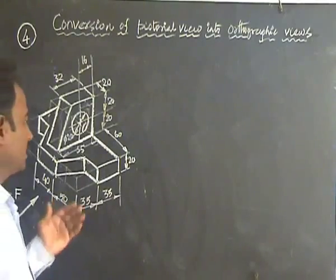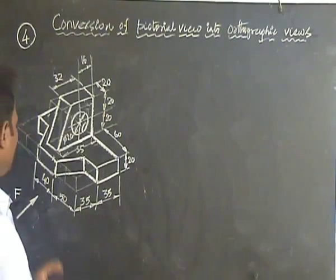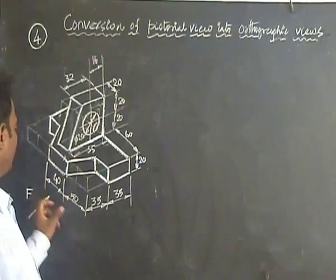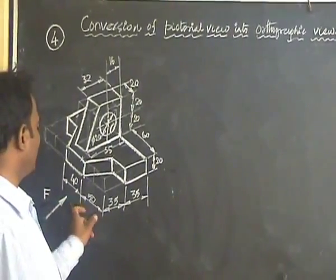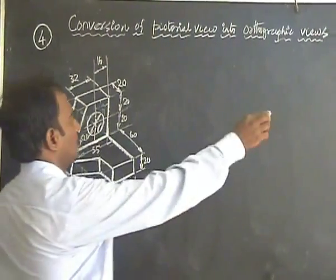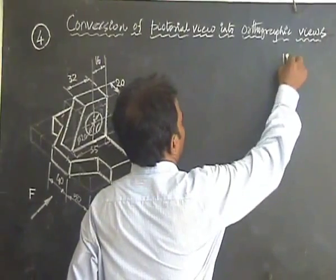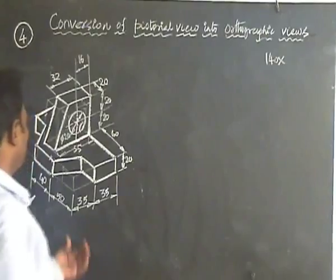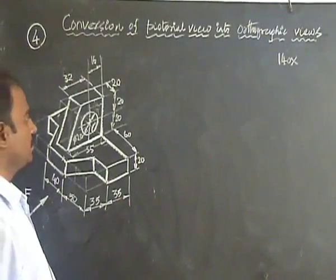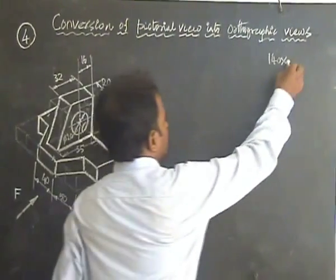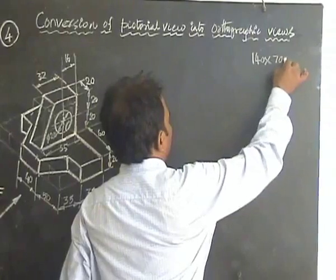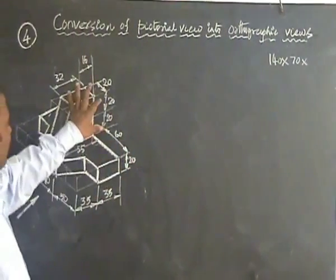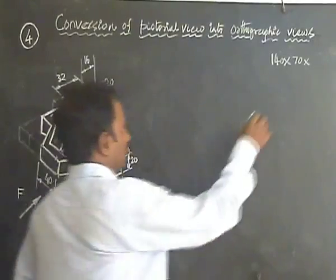Yes, take the overall dimension first. Here the length is 40 at the mid and each side you have 50. So therefore the overall dimension is 140 length. Then you have 35-35 breadth, so together it is 70. Then you have the height as 20 and 40, so therefore the height is 60.